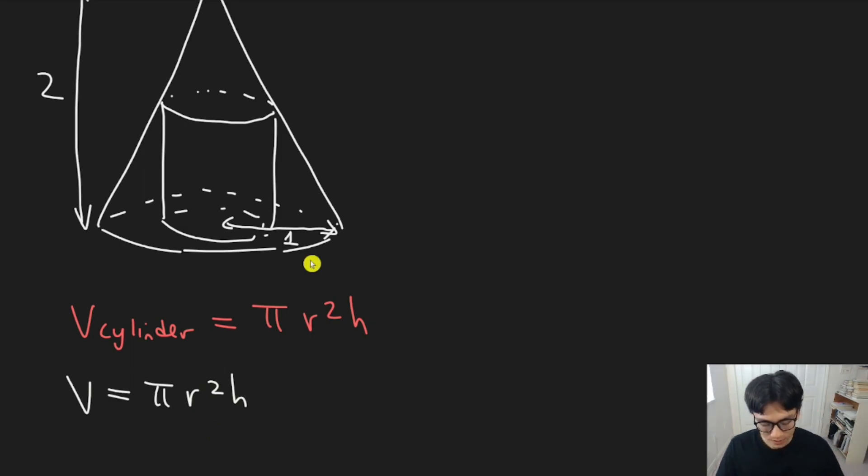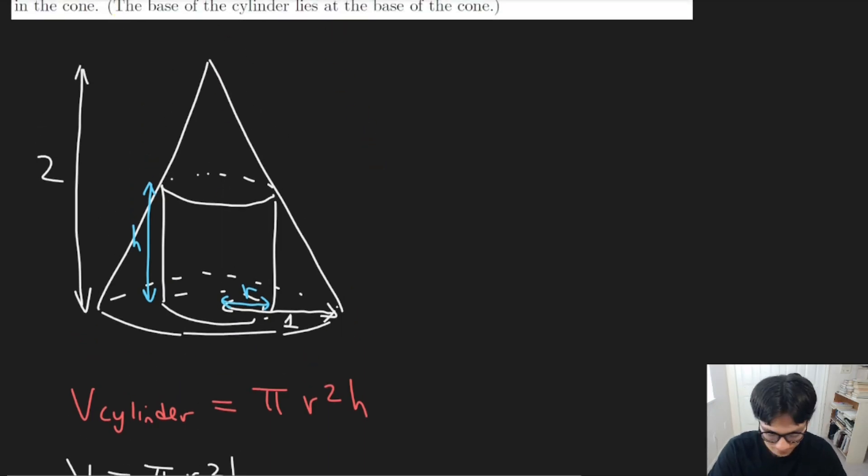So let's look at the diagram once again. r on this diagram is this radius here, this length here, the radius of the cylinder. Similarly, the height or the h of the diagram is this height here, the height of a cylinder. So now if you look at this diagram, you can try to figure out what relationship between r and h we can find. You might have to think about this for a while, but once you do, you'll recognize that it's a similar triangle situation.